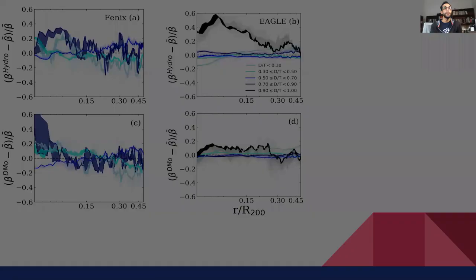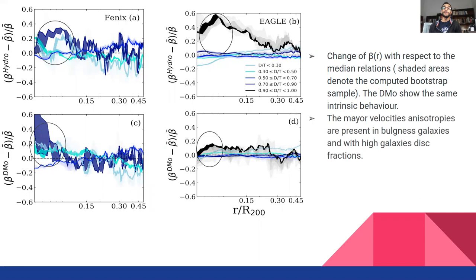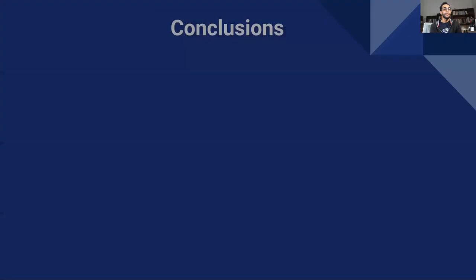So for the last figure, we show the relative change of the anisotropy with respect to the median relation as a function of radius for Phoenix and for Eagle halos. Shadowed areas here enclose the errors computed using a bootstrap sample. Panel B and D that represent the dark matter only halos show slight trends in the same sense, a bit weaker than intrinsic behavior, indicating that halos hosting more important stellar disk structures tend to have a distinct, slightly less isotropic dark matter velocity pattern.